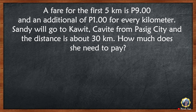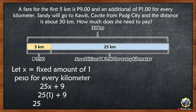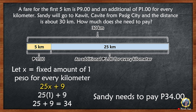Sandy will go to Kawit, Cavite from Pasig City, and the distance is about 30 kilometers. How much does she need to pay? If the first five kilometers is nine pesos, we need to find the fare for the remaining distance. The remaining distance is 25 kilometers. Let x be the fixed amount of one peso per kilometer. We use the expression 25x plus 9. Evaluating: 25 times 1 plus 9 equals 25 plus 9, which equals 34. Sandy needs to pay 34 pesos.